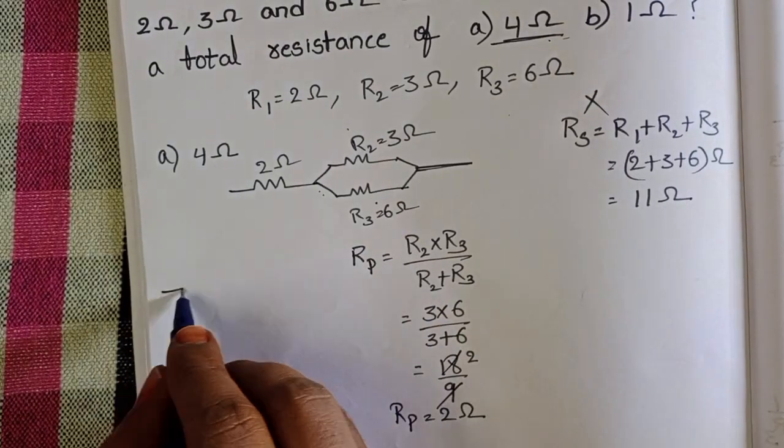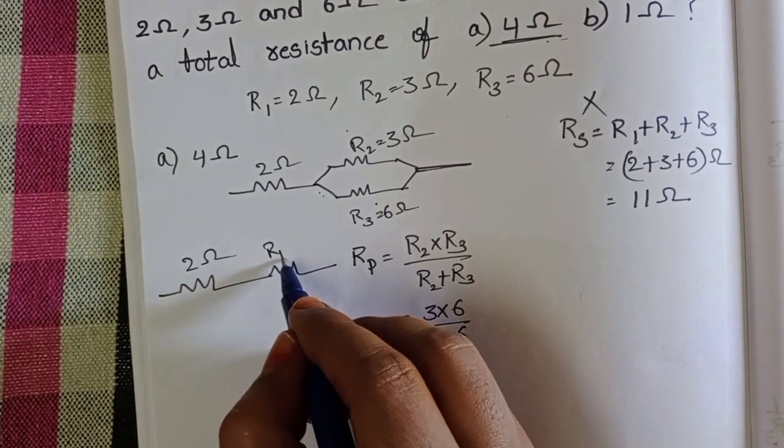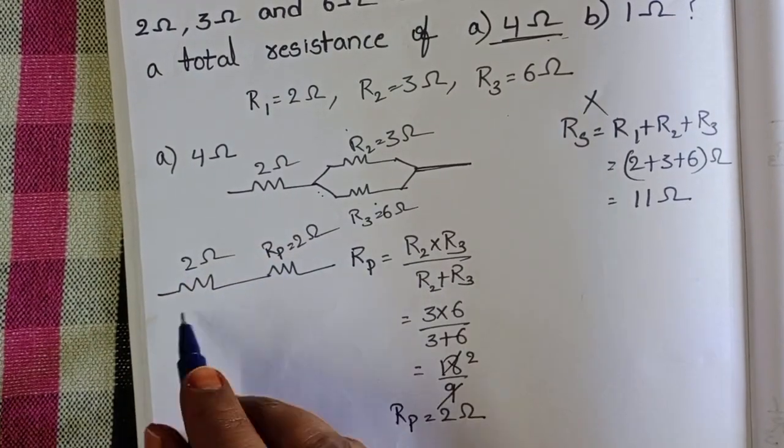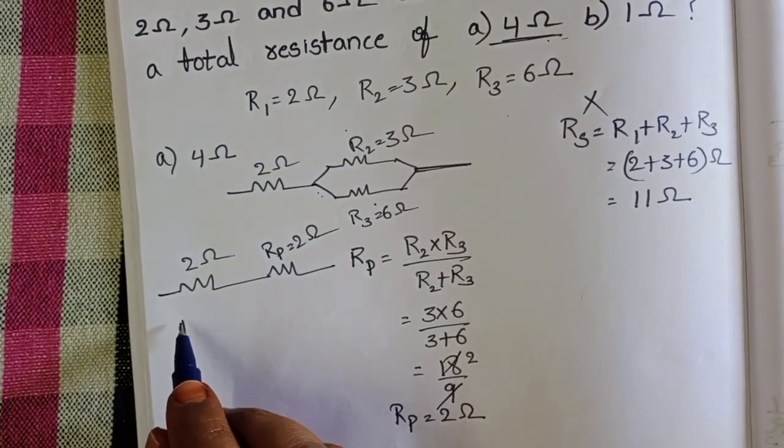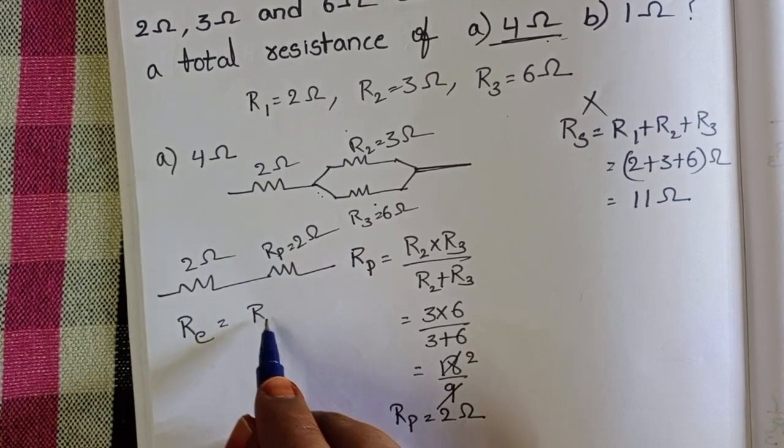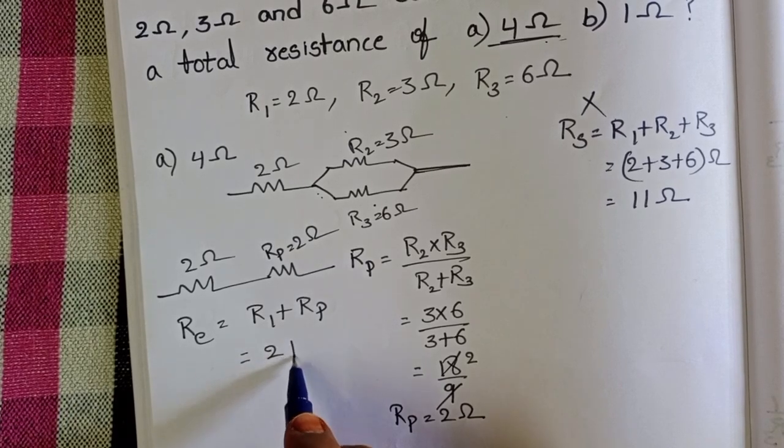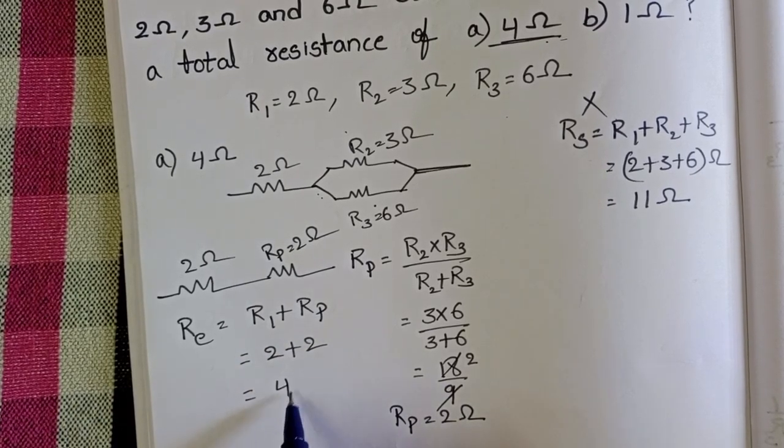Redraw the circuit diagram. First one is 2 ohms and this is 2 ohms. Now, these two are in series connection. So, total equivalent resistance is equals to R1 plus Rp. 2 plus 2 is equals to 4 ohms.